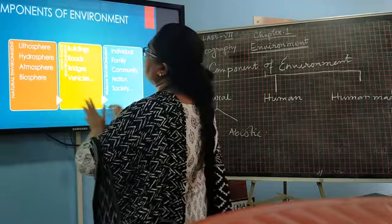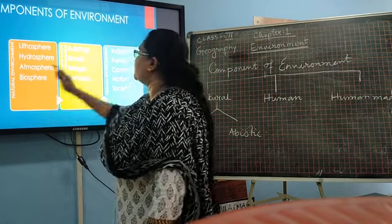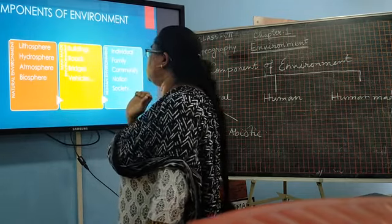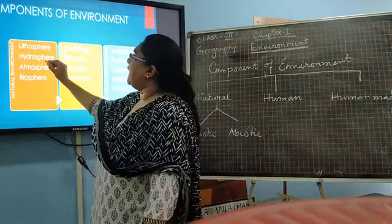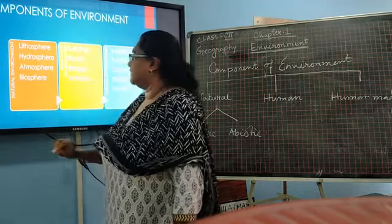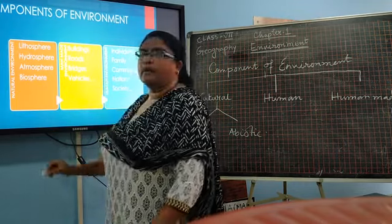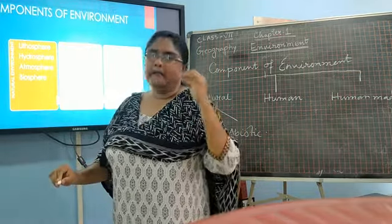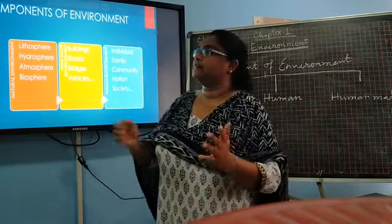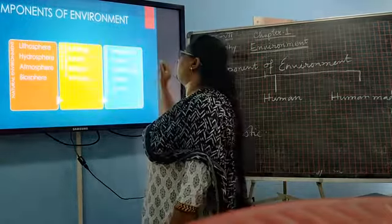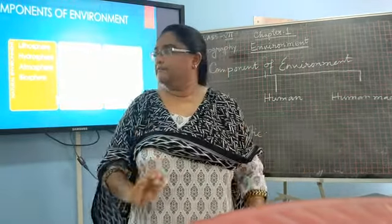Let us combine it. Environment is divided into three parts: natural environment, human-made environment, and human environment. In natural environment we study lithosphere, hydrosphere, atmosphere, and biosphere. Human-made environment includes buildings, bridges, roads, and vehicles. Human environment includes individual, family, community, nation, and society.